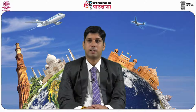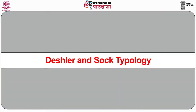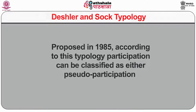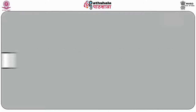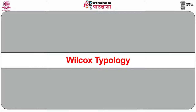There are other popular typologies based on the ladder of participation which can also be used to understand the level of community participation. The first one is the Dessler and Stock typology proposed in the year 1985. According to this typology, participation can be classified as either pseudo-participation or genuine participation, and compresses the eight steps into four: domestication, paternalism, cooperation and empowerment. Then the second one is the Wilcox typology, proposed in the year 1994. There are five stages of participation: information, consultation, deciding together, acting together and supporting.